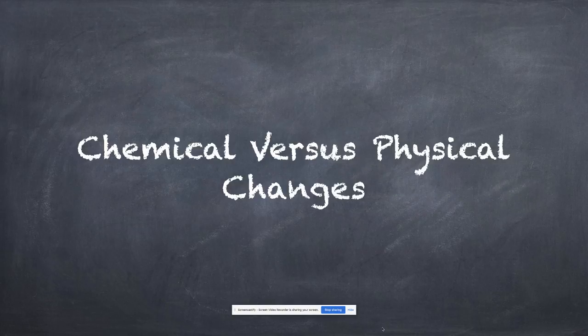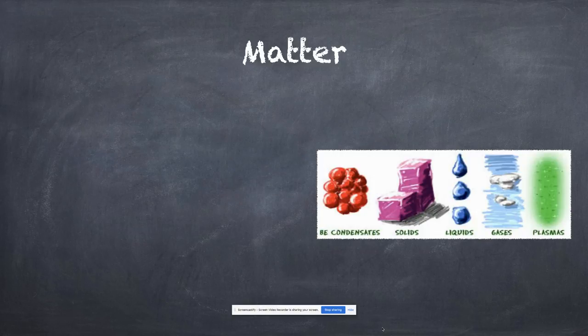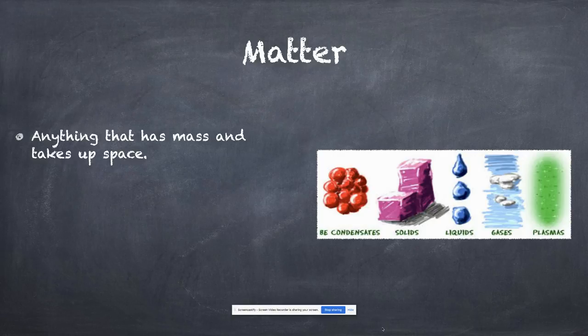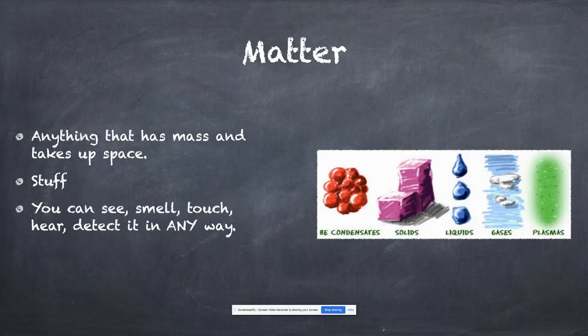We're on the first page of the outline, talking about the difference between chemical and physical changes. First we need to understand the concept of matter. It's probably the simplest word in chemistry to define: anything that has mass and takes up space. You would have heard this in elementary and middle school, but we tend to simplify it and just refer to stuff. Anything you can see, smell, touch, hear, or detect in any way.